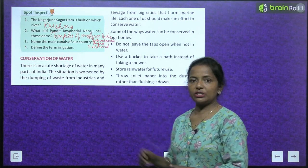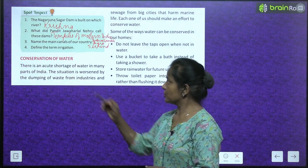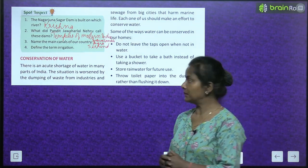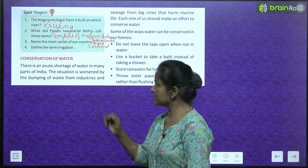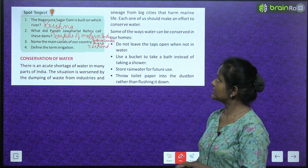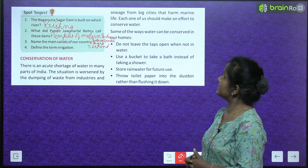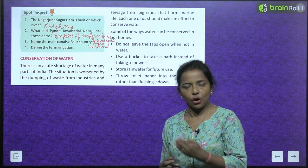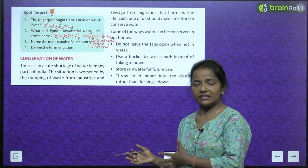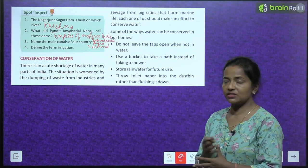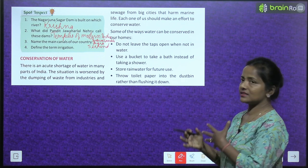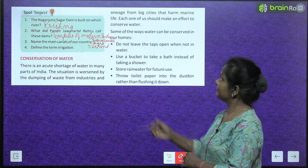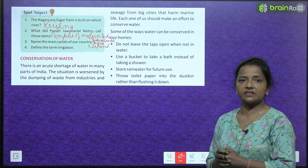Next is conservation of water. There is an acute shortage of water in many parts of India. The situation is worsened by the dumping of waste from industries and sewage from big cities, which harms marine life. Each one of us should make an effort to conserve water.